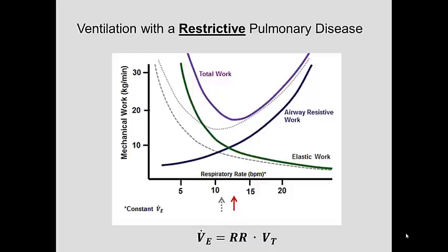Because of this shift in the elastic work relationship, it causes a corresponding shift in the total work relationship — it shifts to the right and slightly upward, because no matter what, it's going to take more effort to ventilate with this increase in the elastic work compared to normal.